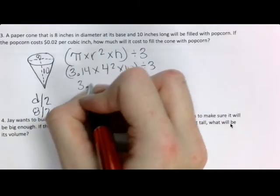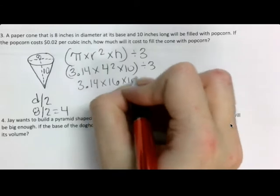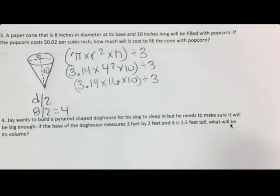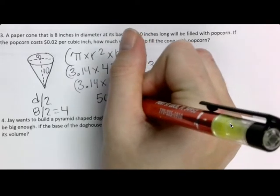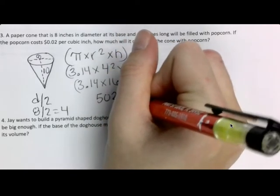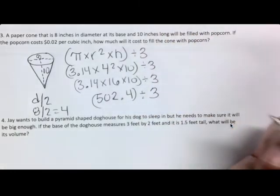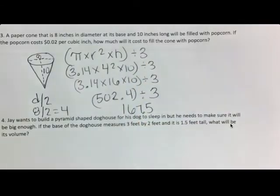So, what is 4 squared? 16 times 10, and then that whole thing is going to be divided by 3. So, if I multiply all the way across, I get 502.4 divided by 3. And that gives me 167 and 5 tenths.